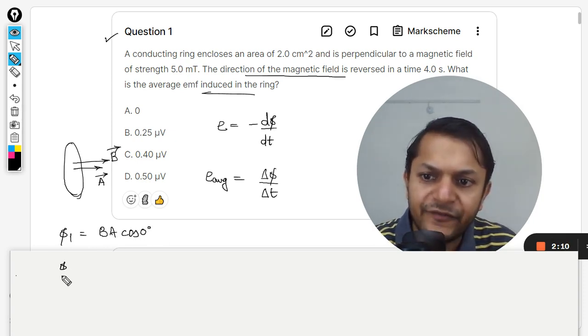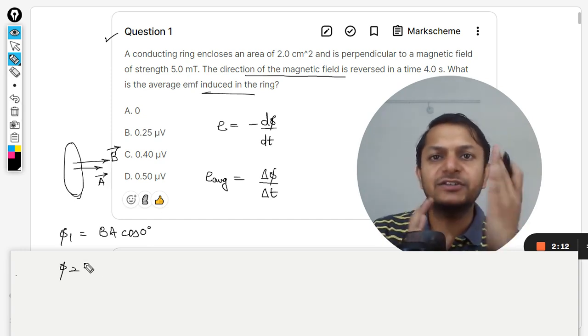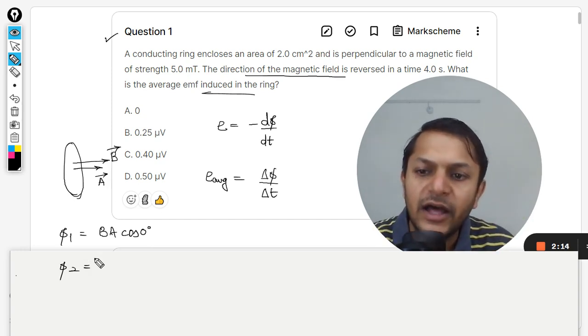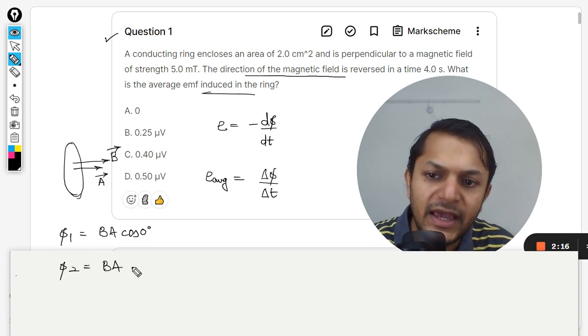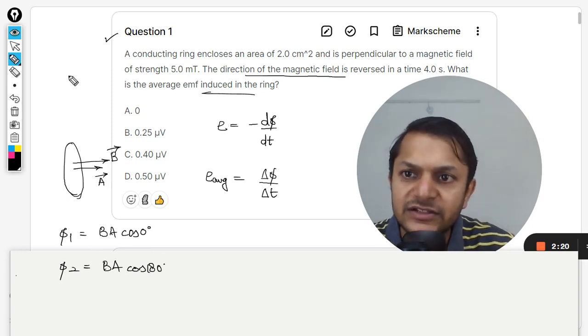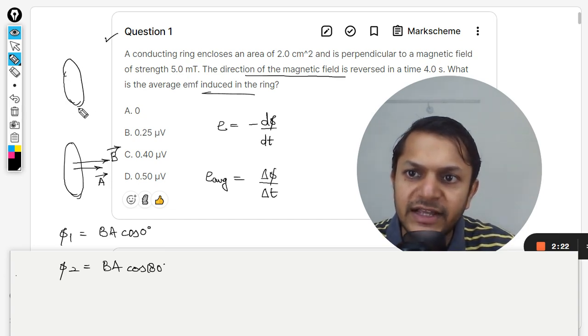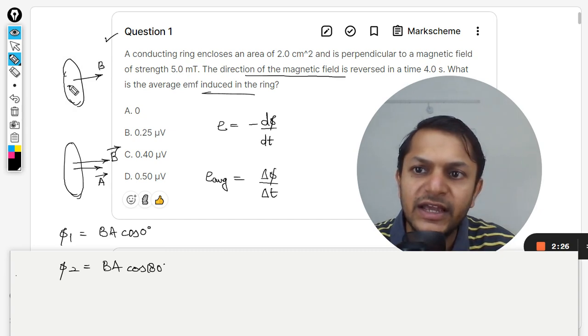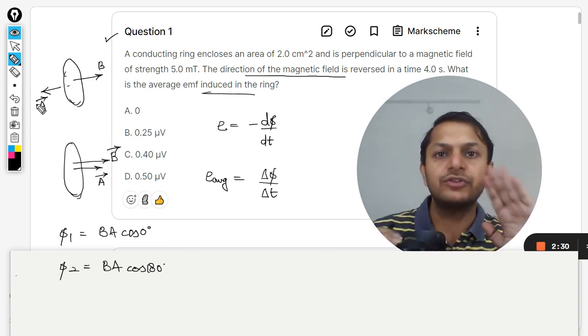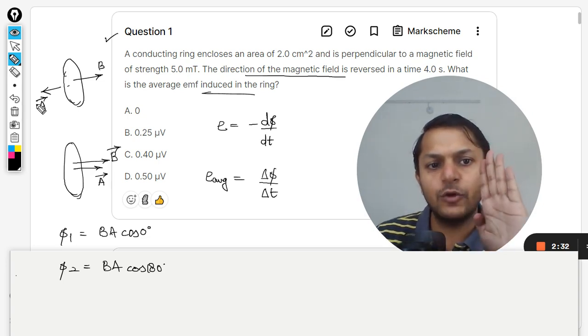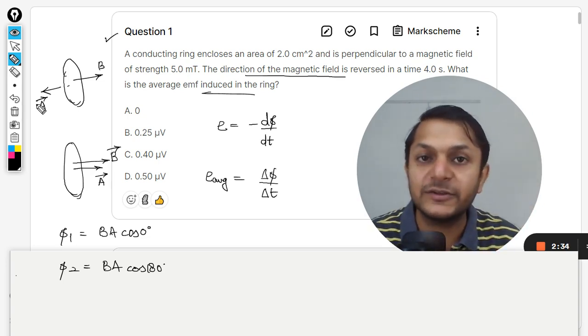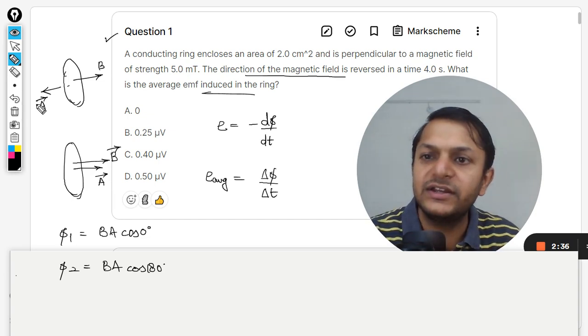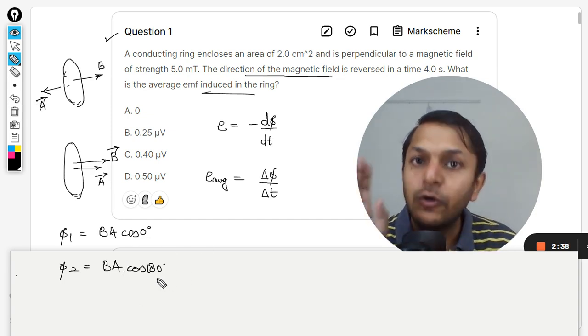And finally when the ring has rotated by 180 degrees, now the flux is like BA cos 180 degrees. So what is this final situation? The final situation is like this is a ring, magnetic field is still this, but now the area is pointing towards the other opposite direction because now the ring has been flipped like this.